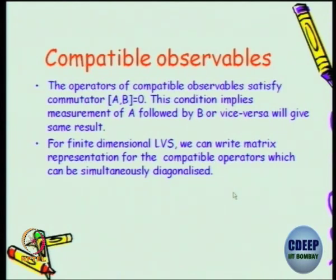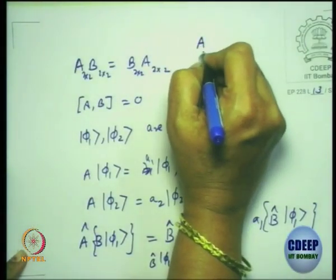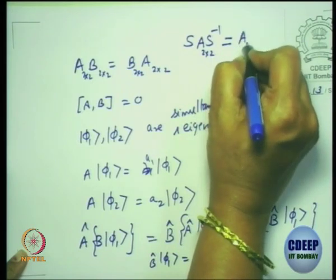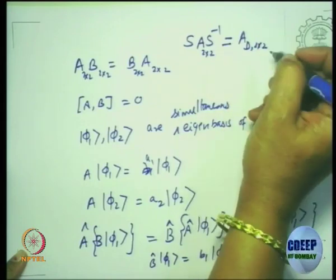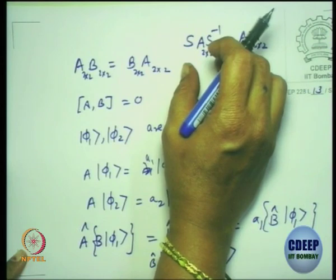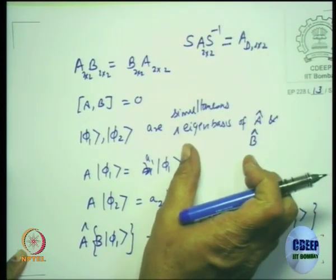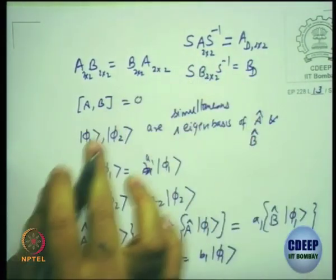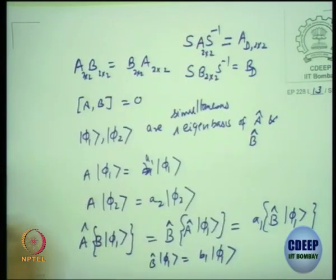When I say simultaneous eigenbasis, it means that given operators A and B as 2×2 matrices, you can find an S matrix — a similarity transformation — which gives you a diagonal matrix. The claim is that this same S matrix which diagonalizes A should also diagonalize B. It cannot be a different S matrix. Both A and B are simultaneously diagonalized by the same diagonalizing matrix, which gives the same two eigenvectors for both A and B.